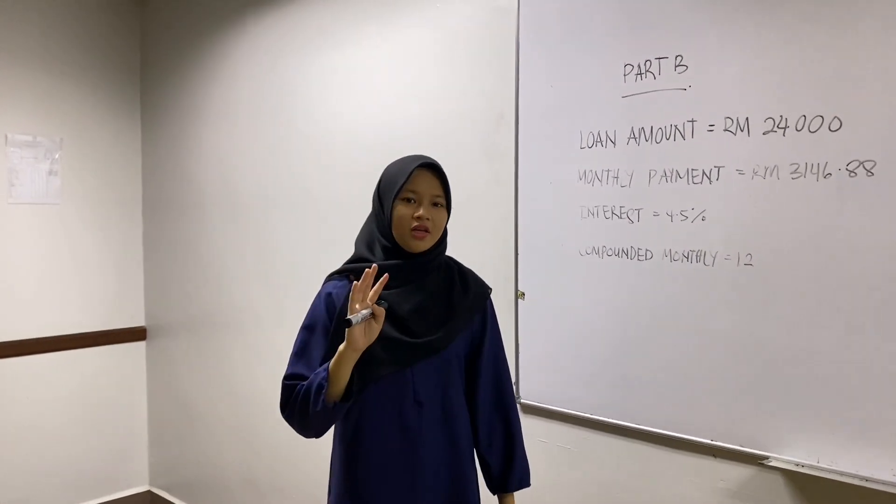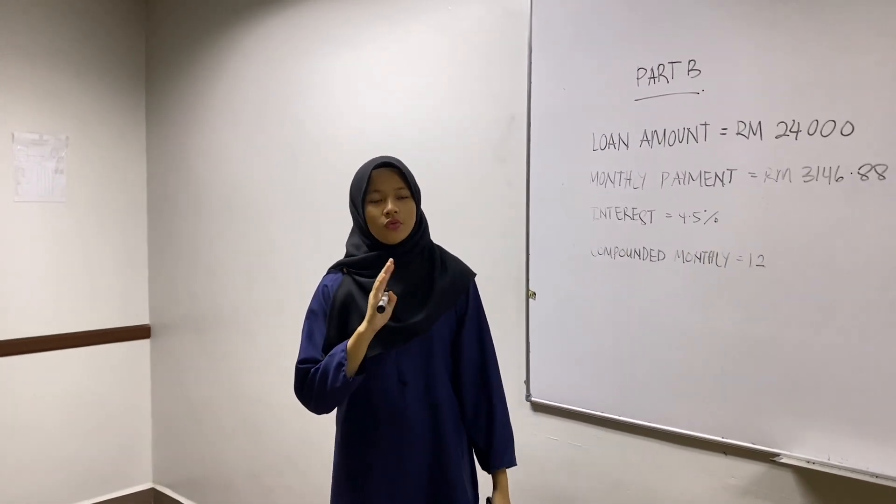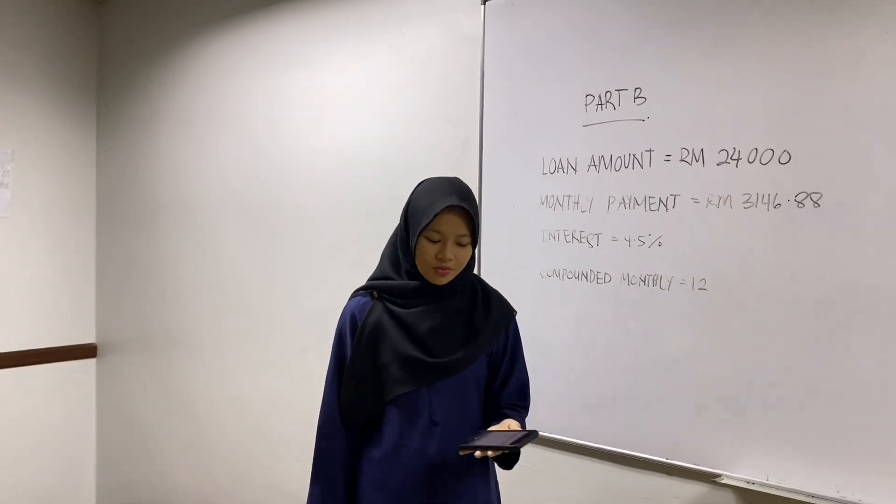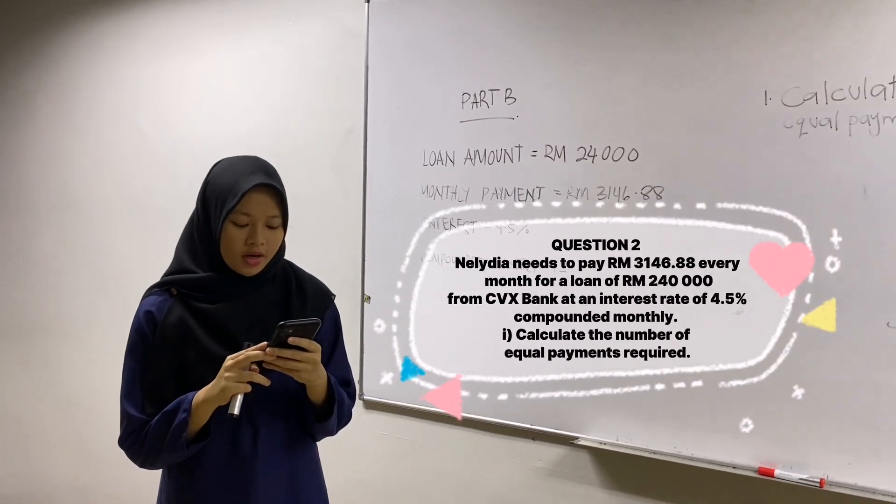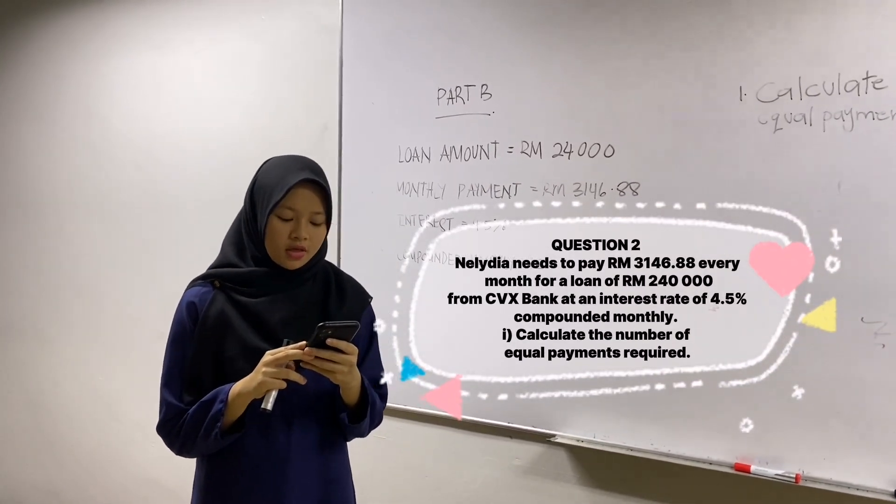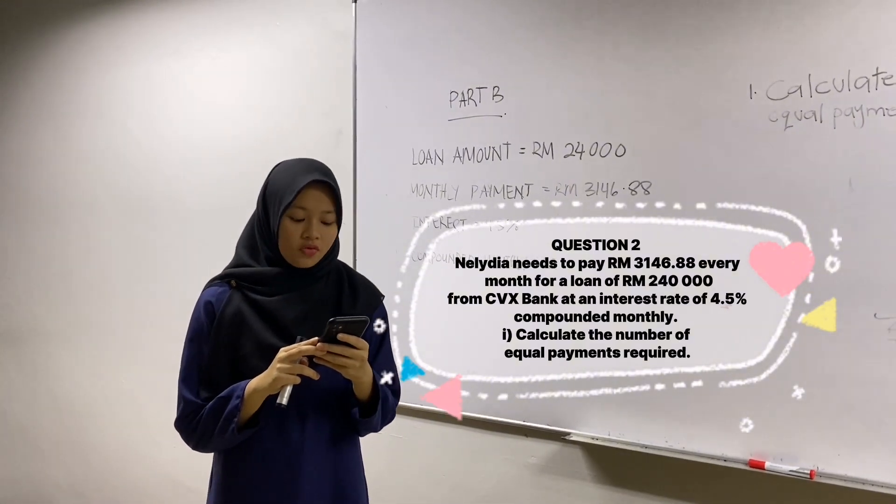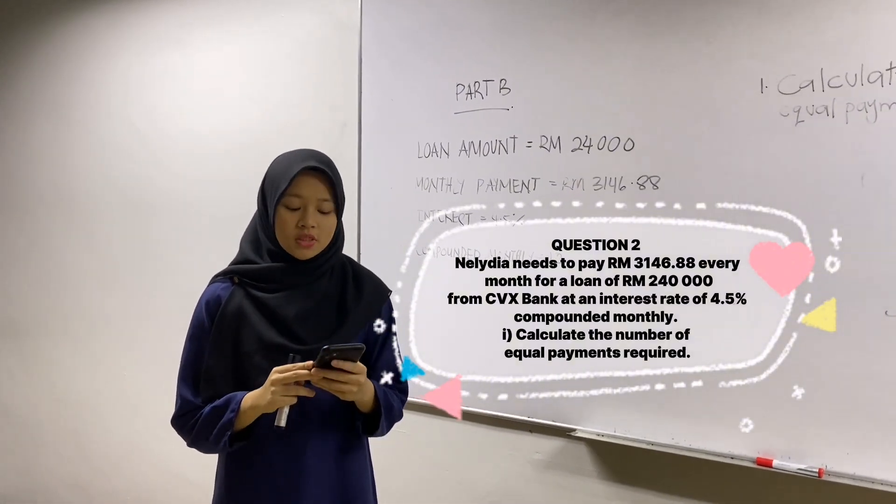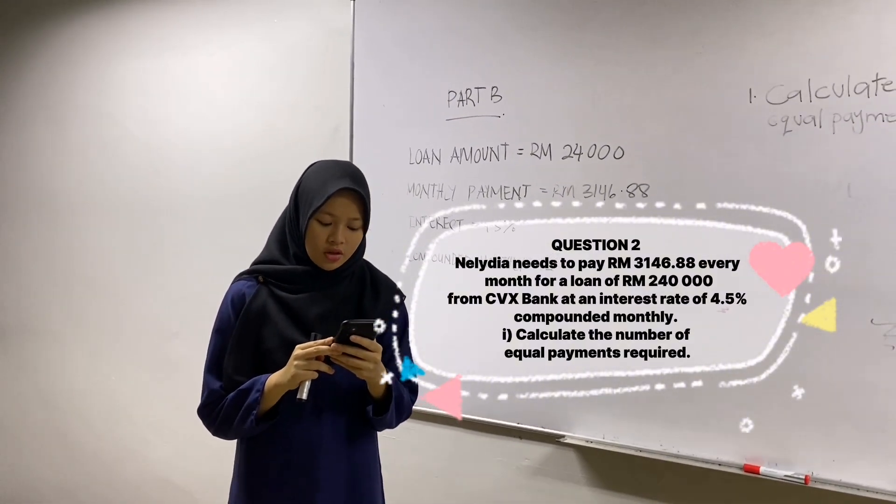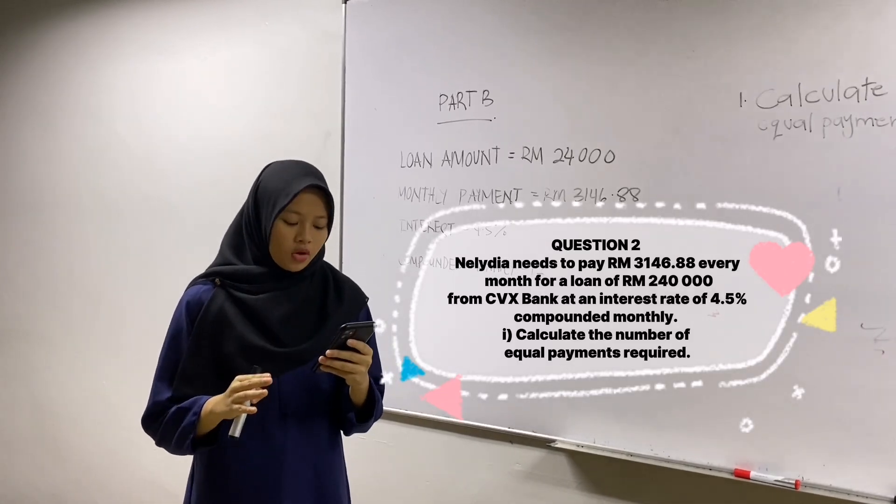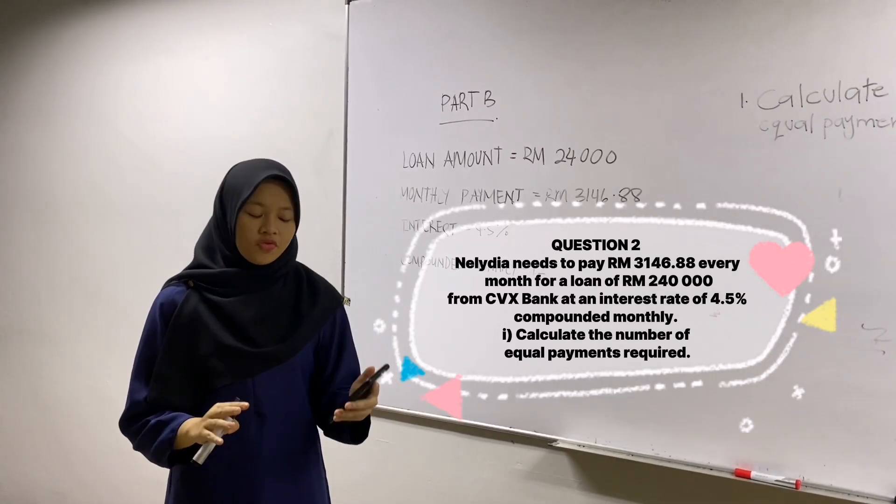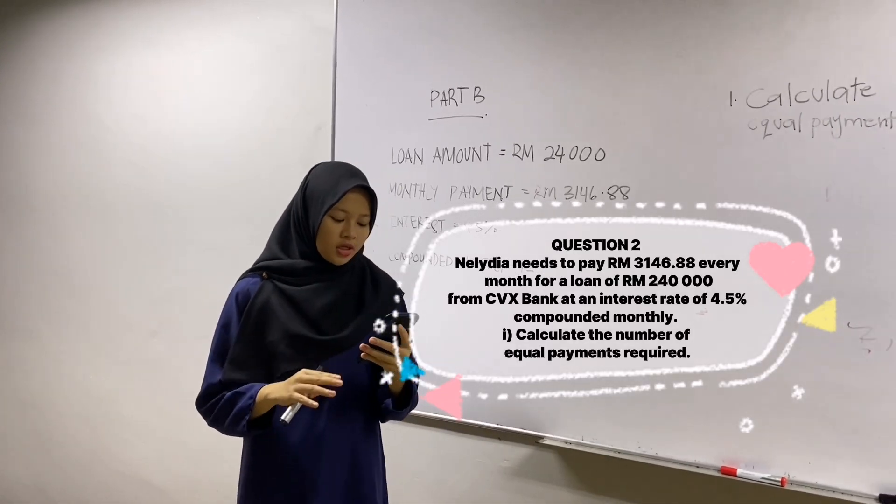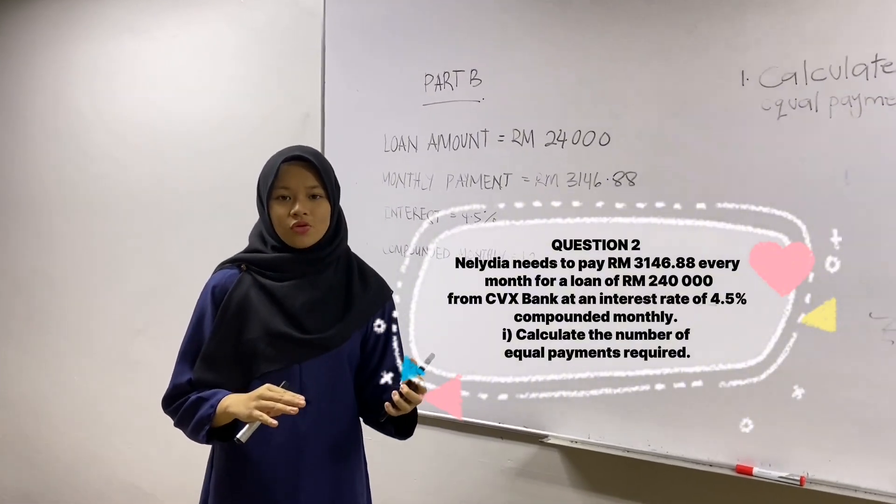Hi guys, today I'm going to read the question that I got, which is Part B question 2. Let's read together. Nelda needs to pay RM2,146.88 every month for a loan of RM240,000 from CVX Bank at an interest rate of 4.5% compounded monthly. The first question that I got is calculate the number of equal payment required.